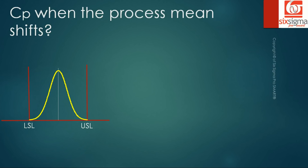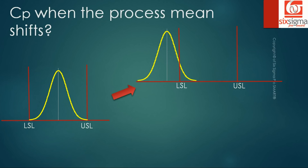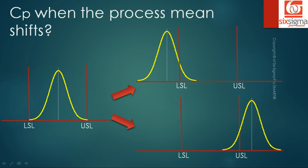But let's assume there is a shift in the process. Over a period of time, our process which used to be within the specification limits is now either below the lower specification limit or above the upper specification limit. Since the customer will only accept products within the specification limits, this shift represents a real loss — all products beyond the specification limits will get rejected.